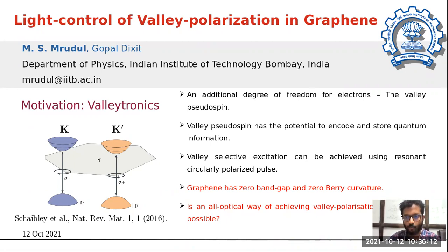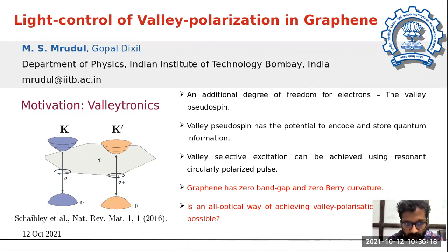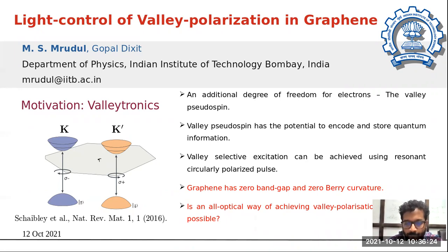Valley pseudo-spin has the potential to encode and store quantum information, and in such materials valley-selective excitation is done using a circularly polarized pulse resonant with the material's band gap.